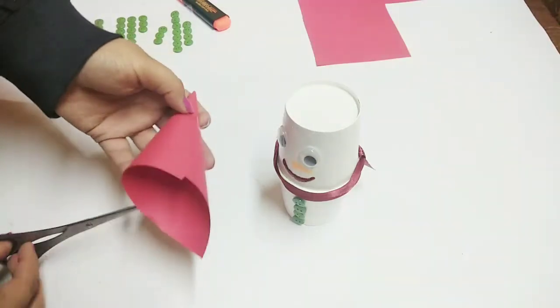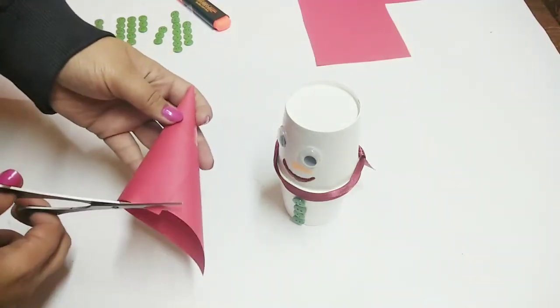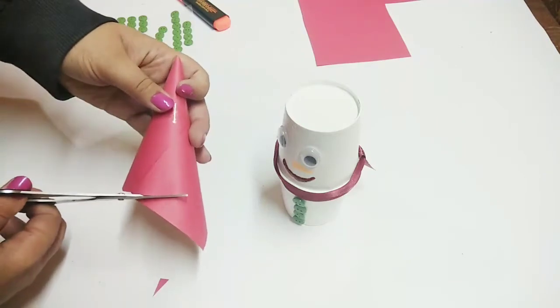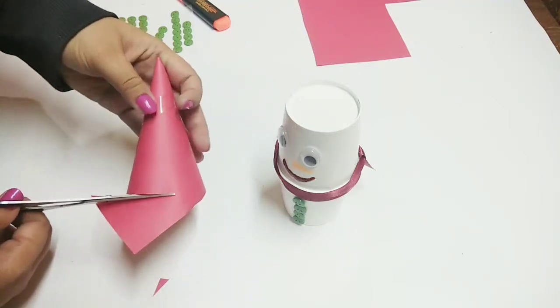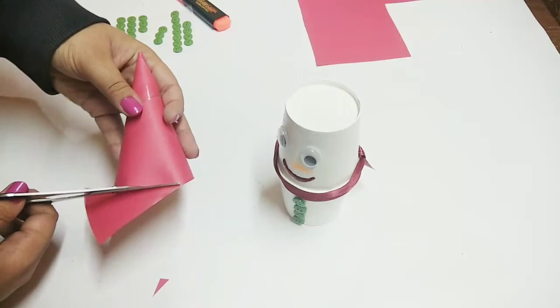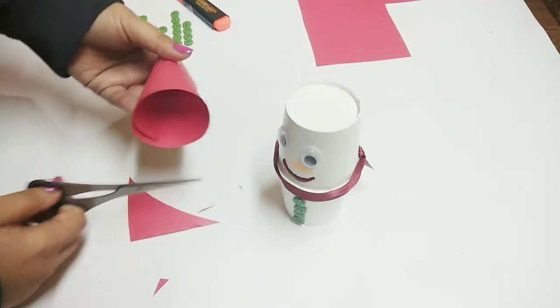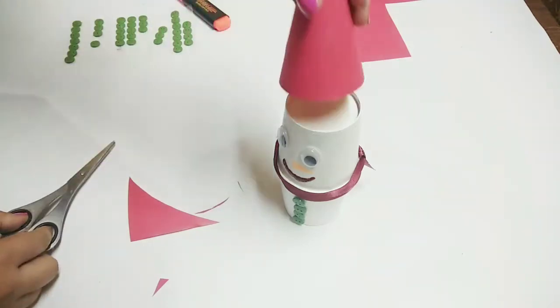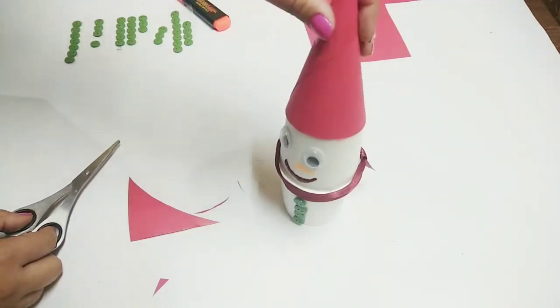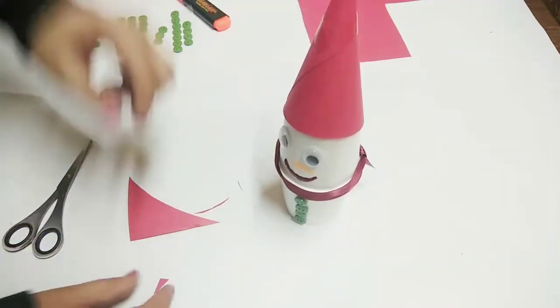I will be cutting the excess of course, and then afterwards we will try to fit it over the snowman. If it's properly fitting the size, then using a glue or Fevicol we will put it on top of the snowman. So now we will place it like this.